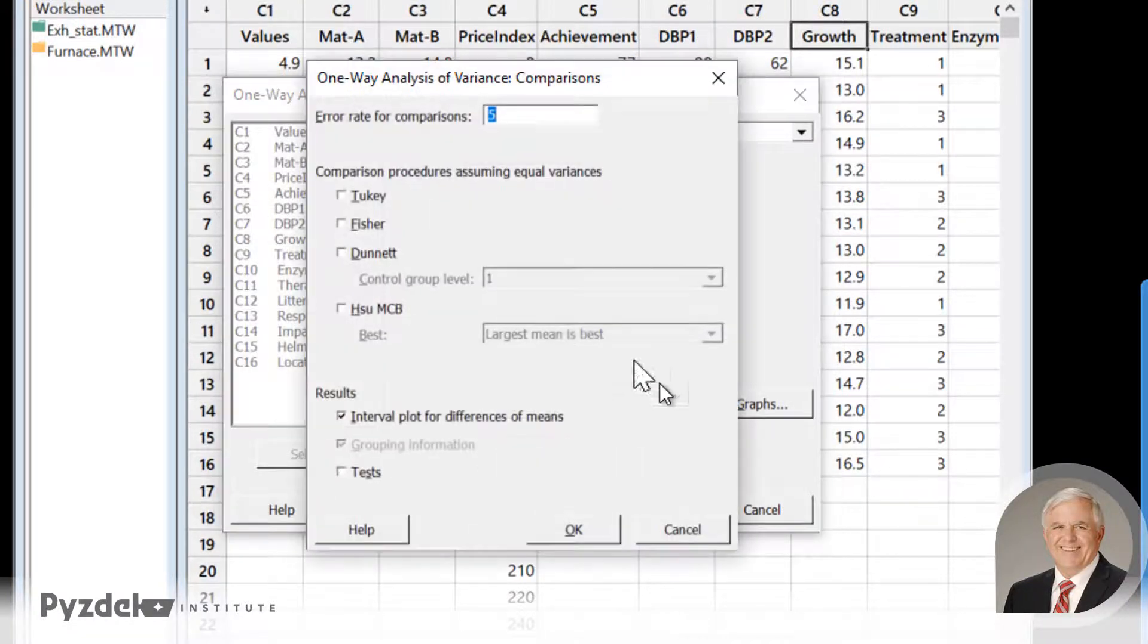The comparisons is something different. Now we're going to do comparisons of the different treatment means to one another. In Excel, we just looked at the difference between the smallest average and the largest. With Minitab, we can also compare the differences between groups. So let's just pick one of these for simplicity: the Tukey test.